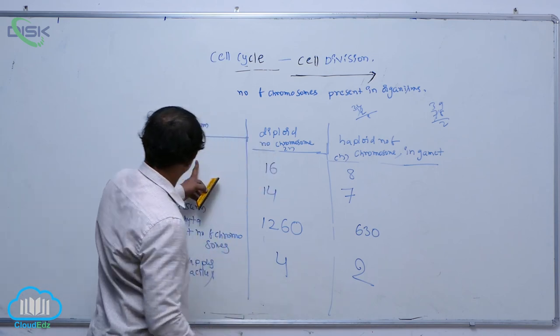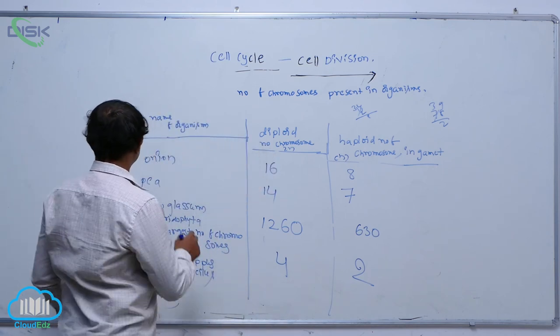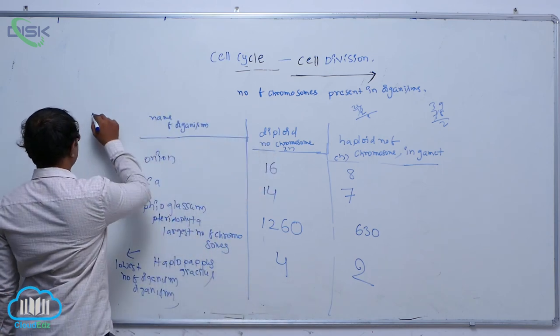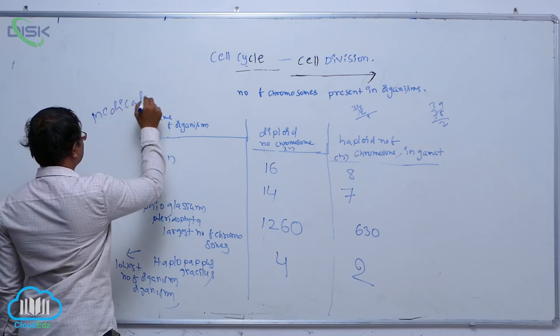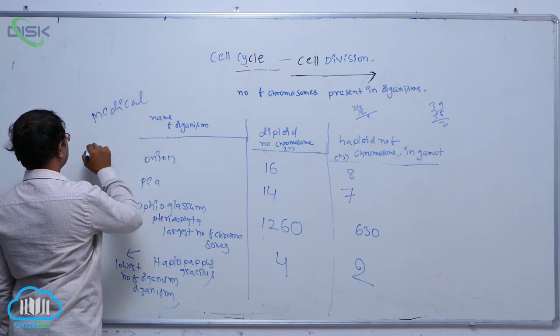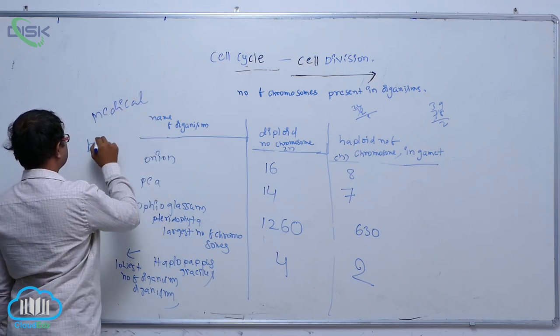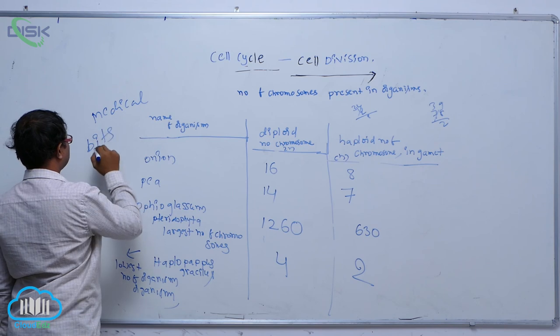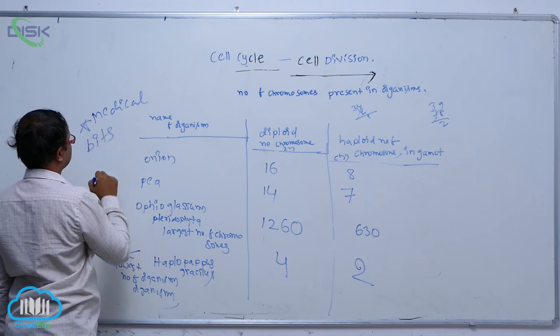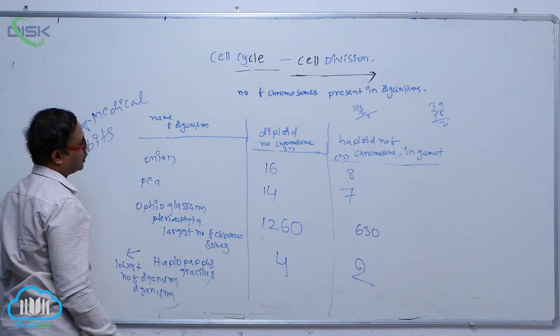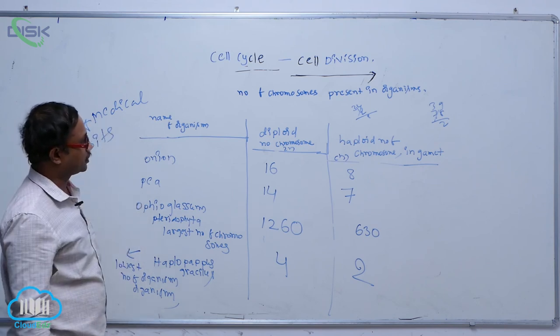So these are the number of chromosomes present in organisms. This is important from the medical point of view, so these are the medical bits needed for the exam.